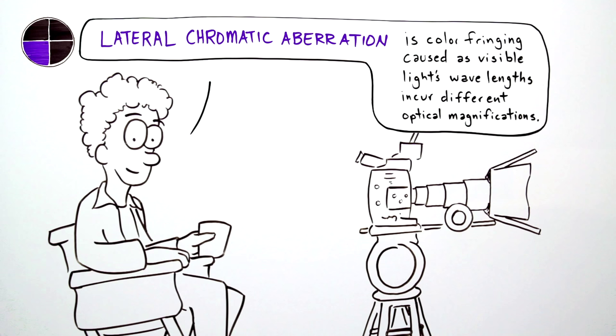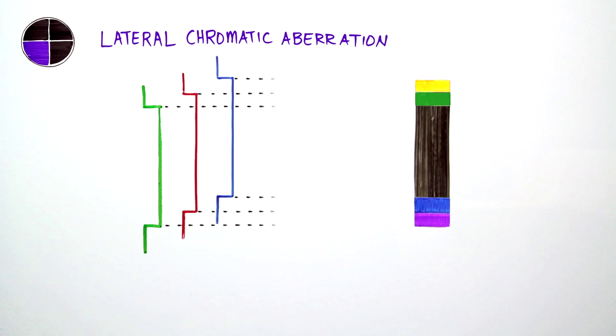The last benchmark is lateral chromatic aberration, or color fringing, caused as visible light's wavelengths incur different optical magnifications. It's the nemesis of a gorgeous image.